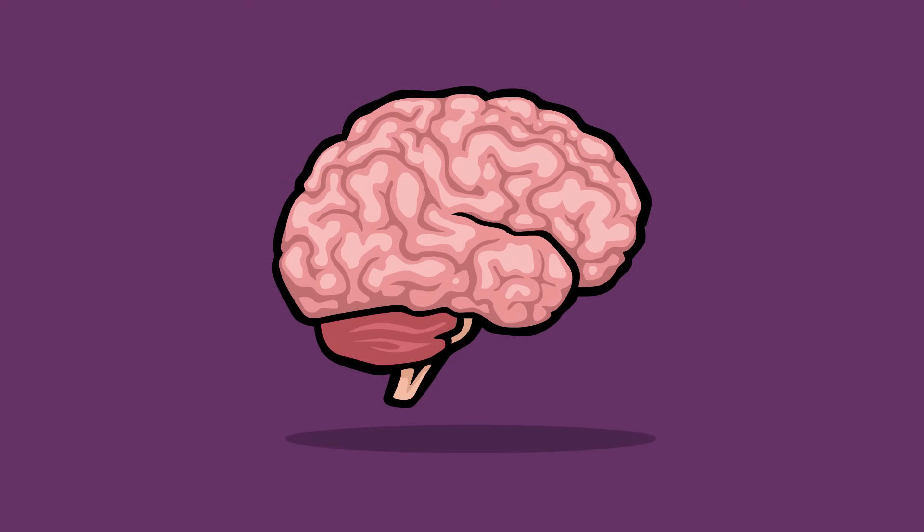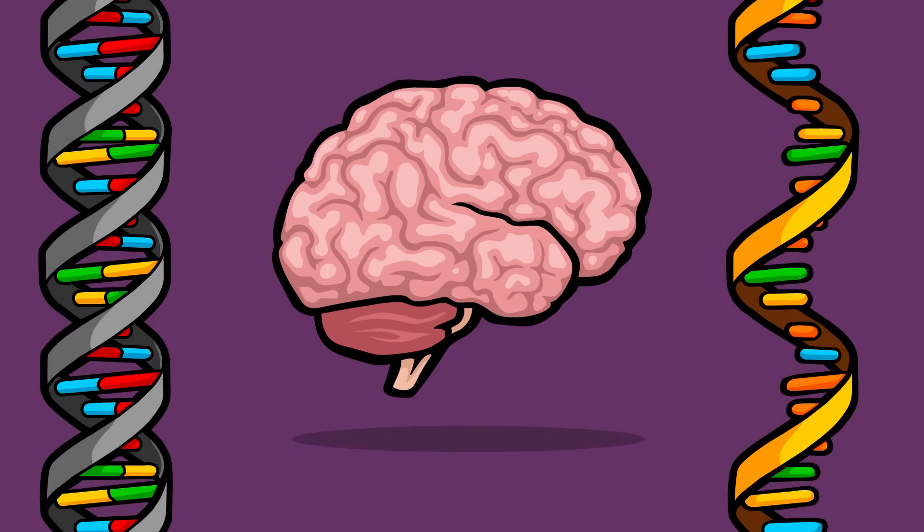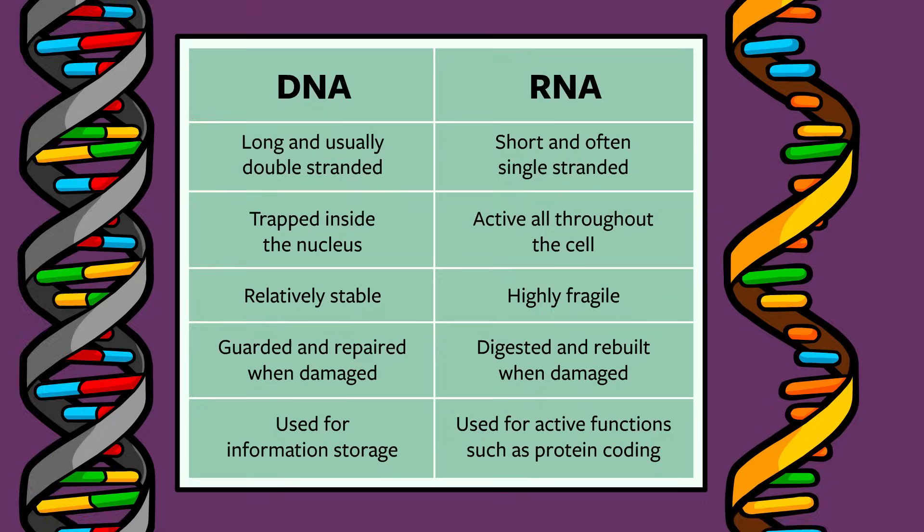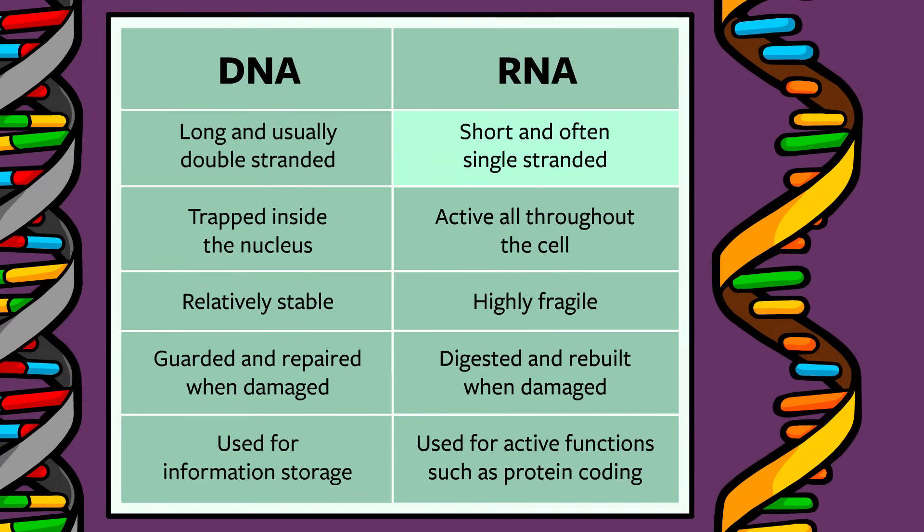So to recap, even though DNA and RNA are nearly identical, there are several important and easy-to-remember differences. Chains of RNA are relatively short and often single-stranded. They are active all throughout the cell. They're highly fragile. They are digested and rebuilt by the cell when damaged. They are used for active functions such as protein coding.